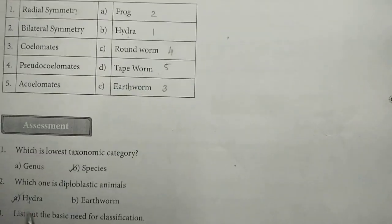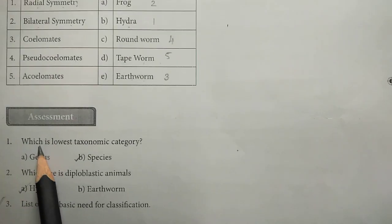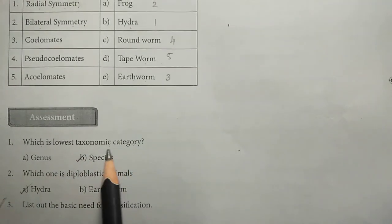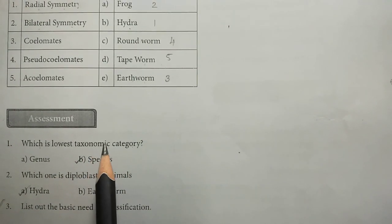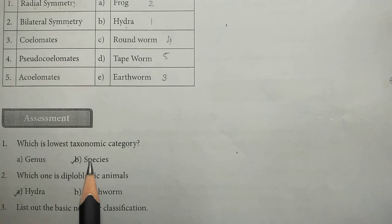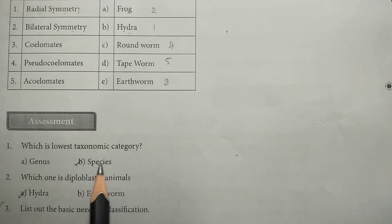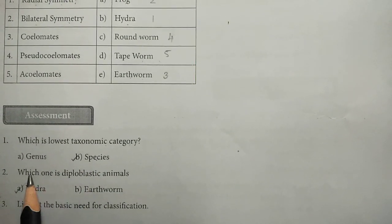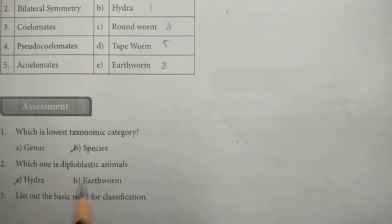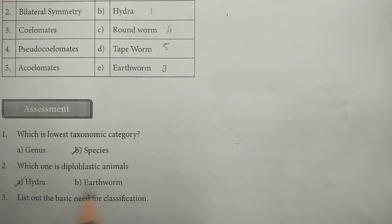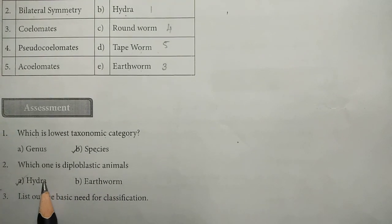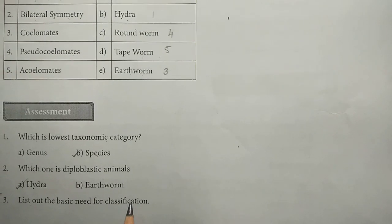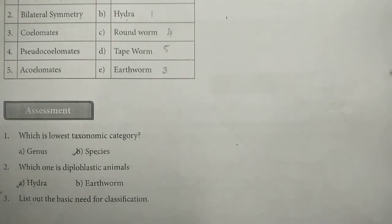Assessment: which is the lowest taxonomic category? Species is the lowest in the category. And which is the diploblastic animal? Hydra is the answer.